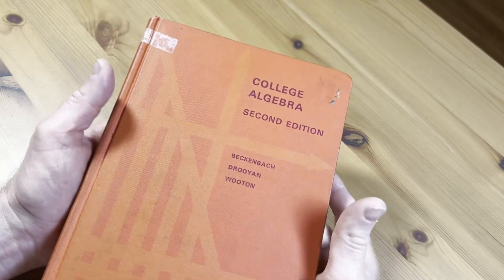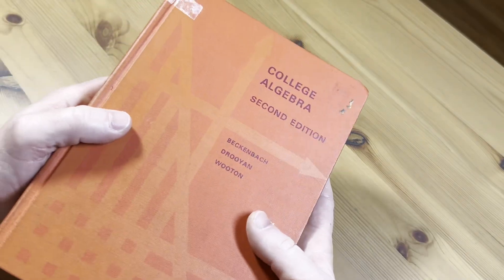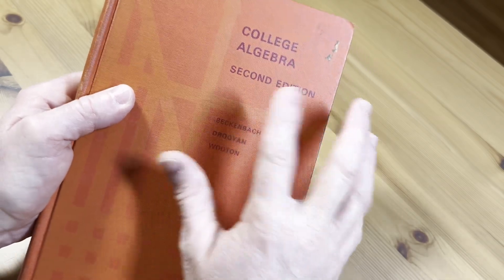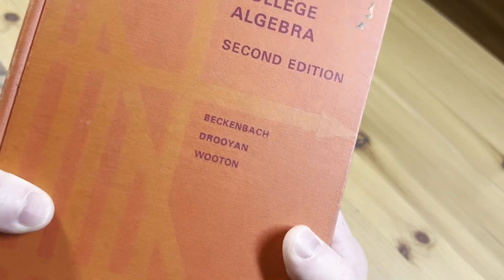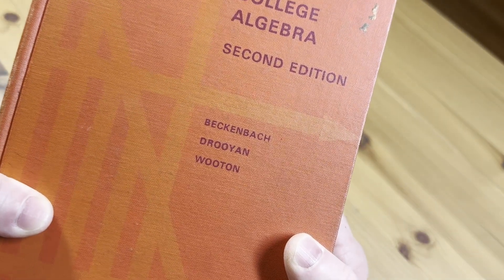Hi everyone. In this video, we are going to take a look at this mathematics book. It is called College Algebra. It is the second edition, and it was written by Beckenbach, Drouillon, and Wuton.